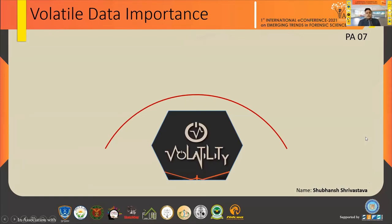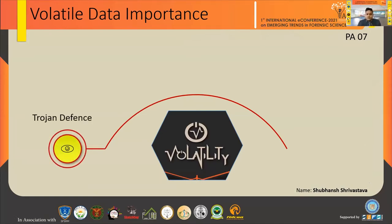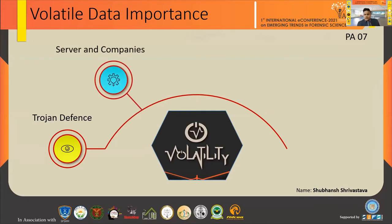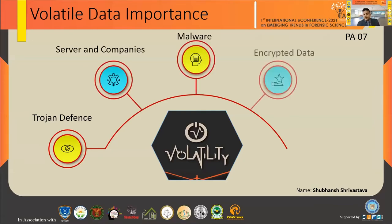Let's see why volatile data is important. There are a few parameters: Trojan defense, servers and companies, malware, encrypted data, and running processes.